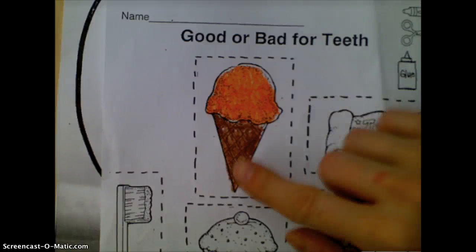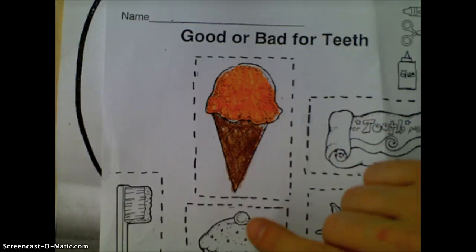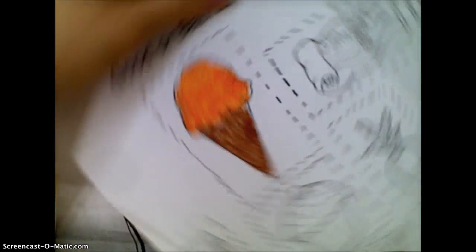Now that you have colored in one of your pictures, it's a picture of ice cream. Is ice cream good or bad for your teeth? You're going to cut out this picture on a dotted line. So you'll grab your scissors.